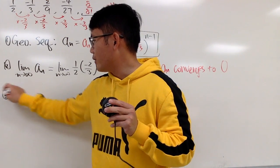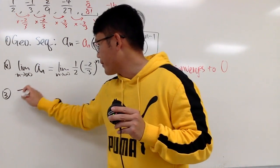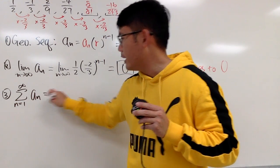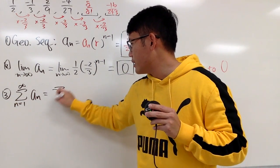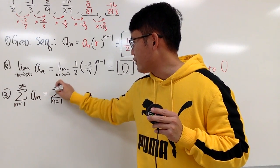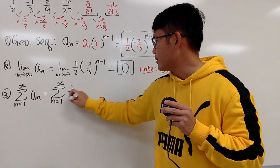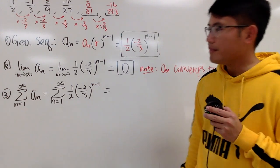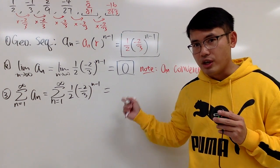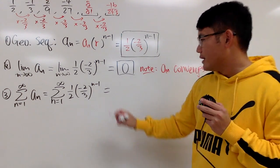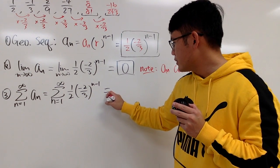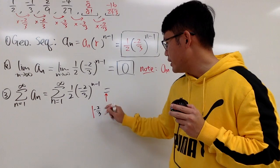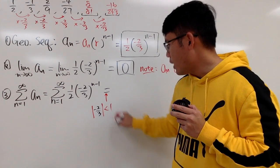Alright. Last part, of course, you guys all know, will be the series part. So you take the sum as n goes from 1 to infinity of An. In this case, of course, this is the sum as n goes from 1 to infinity of 1/2 times (-2/3) to the n minus 1 power. Well, this is a geometric series. And as we all know, because the absolute value of -2/3 is less than 1, it does converge.